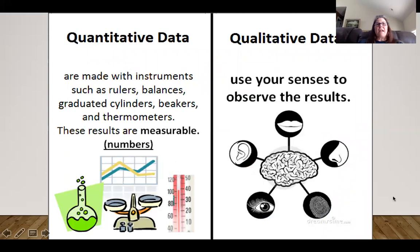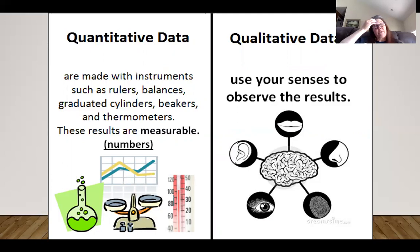In this lab we also define quantitative and qualitative. Quantitative is when you're using devices — a ruler, a spectrophotometer, a scale — to get actual numerical data readings. Qualitative is when you're generally using one of your senses to make an observation.